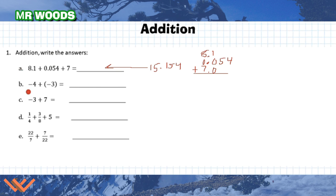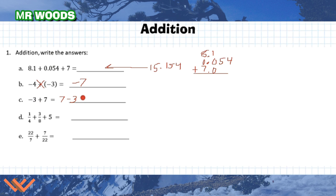Let's move on to problem 1b. So it's negative 4 plus negative 3. Well, that's just minus 4 minus 3, which equals minus 7. Now here we have something a little different: minus 3 plus 7. That is also equal to 7 minus 3, which equals 4.